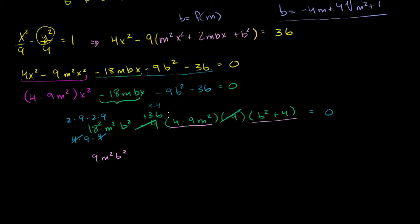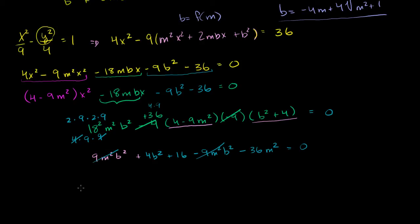So we have plus 4b squared, and then 4 times 4 gives plus 16. Then we have negative 9m squared times b squared, giving negative 9m squared b squared. And then negative 9m squared times 4 gives negative 36m squared. That is equal to 0. The 9m squared b squared terms cancel out. Everything remaining is divisible by 4, so dividing by 4 we get: b squared minus 9m squared plus 4 equals 0.